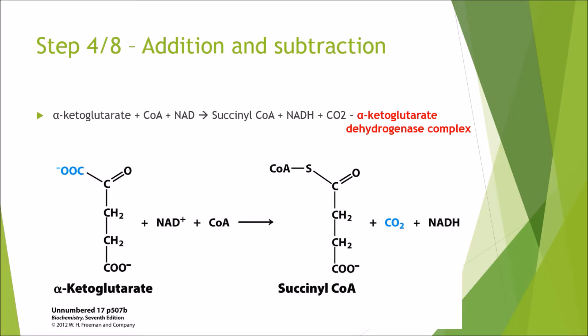Step 4 of 8 is addition and subtraction. Here alpha-ketoglutarate bonds with CoA and NAD to form succinyl CoA, our reduced electron carrier, and another carbon dioxide, and that is catalyzed by alpha-ketoglutarate dehydrogenase complex. All we are doing is cleaving off this carboxyl group and replacing it with our CoA group.